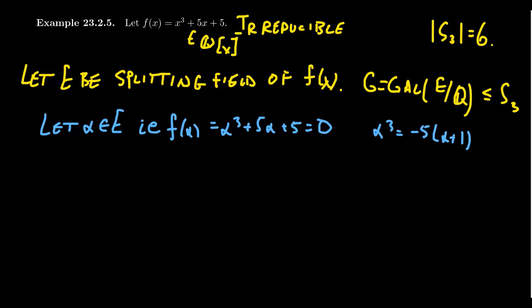If we wanted to use the cubic formula, we could find the exact expression for α and its two other conjugates using square roots and cube roots, but that gets very complicated. I'm trying to compute what the Galois group is from a more theoretical point of view — I don't necessarily need to know exactly what α is to determine the Galois group. With our field E, there is one very important subfield we can establish: Q(α). The extension Q(α) over Q is a degree 3 extension because α is a root of an irreducible degree 3 polynomial.